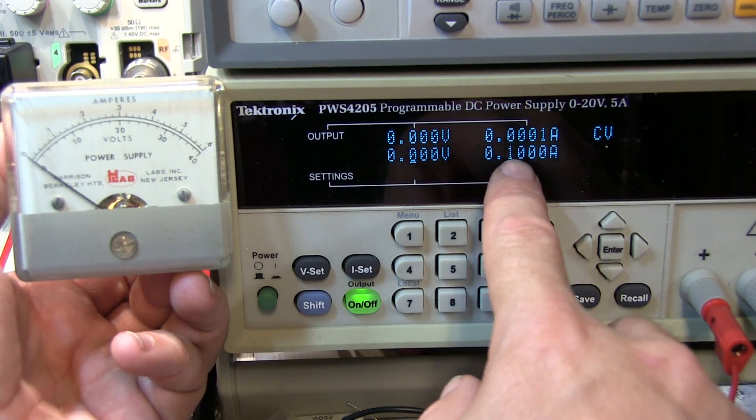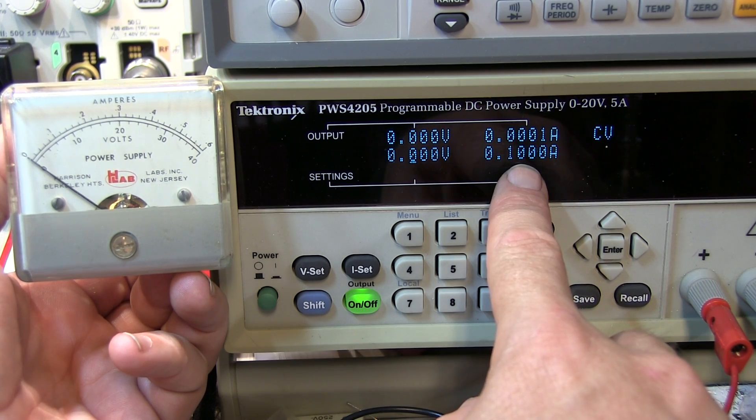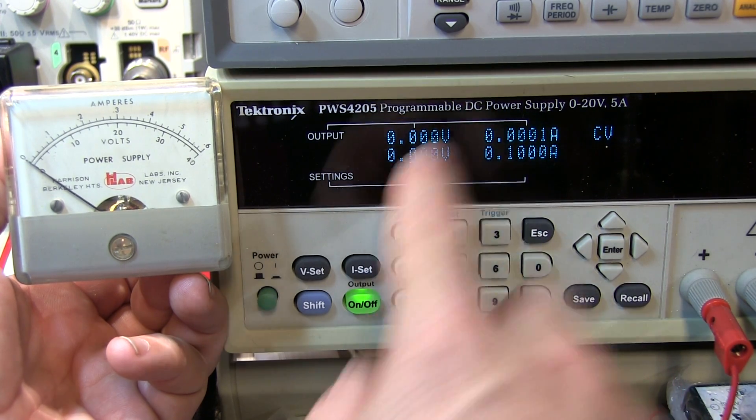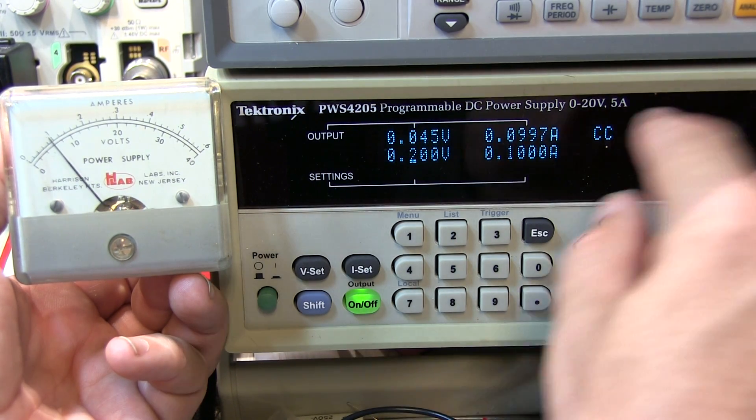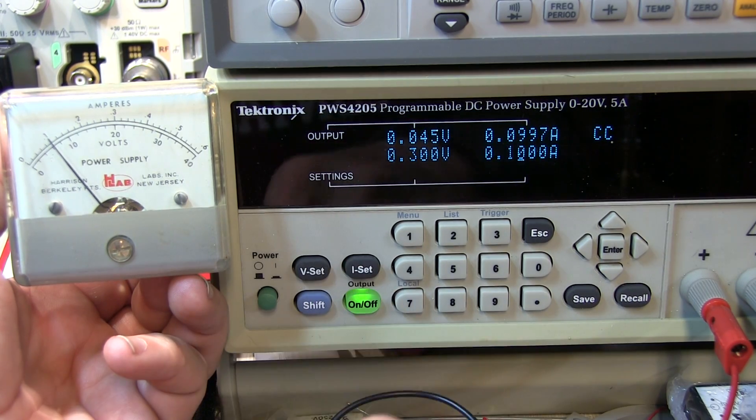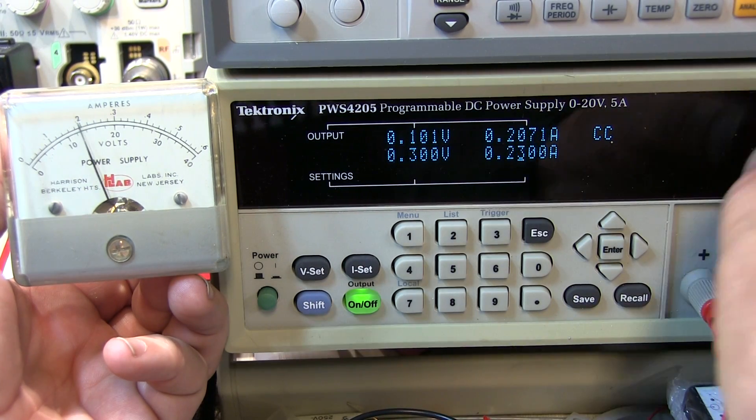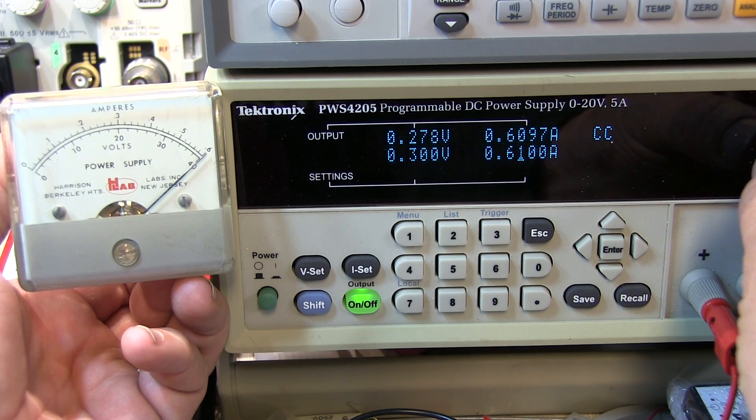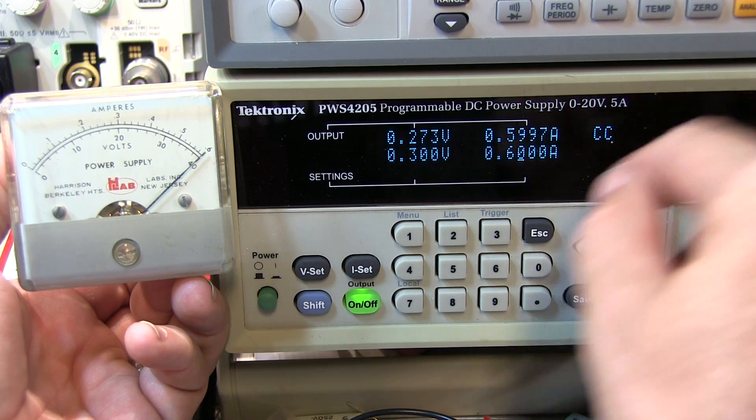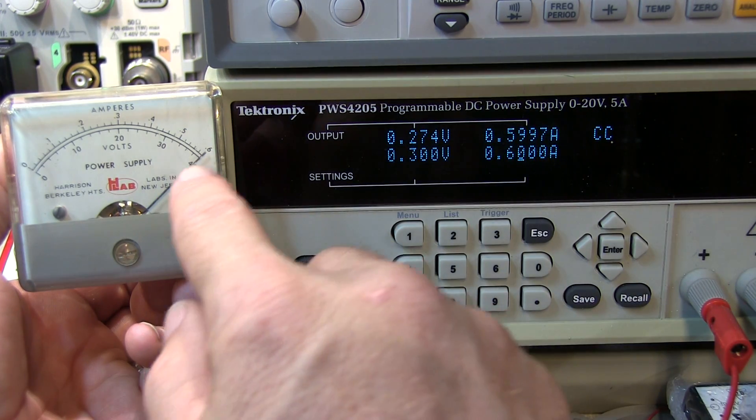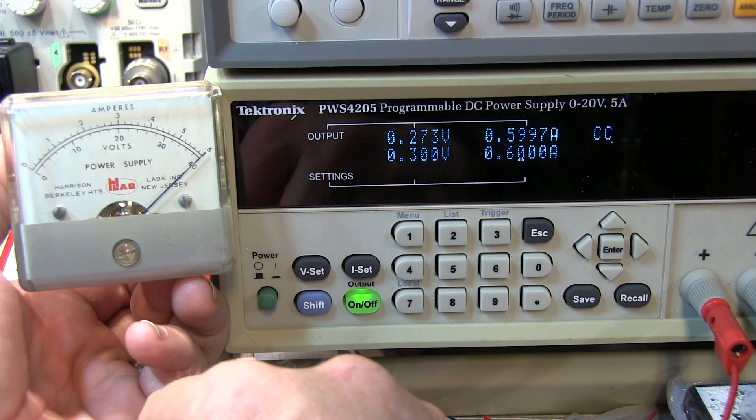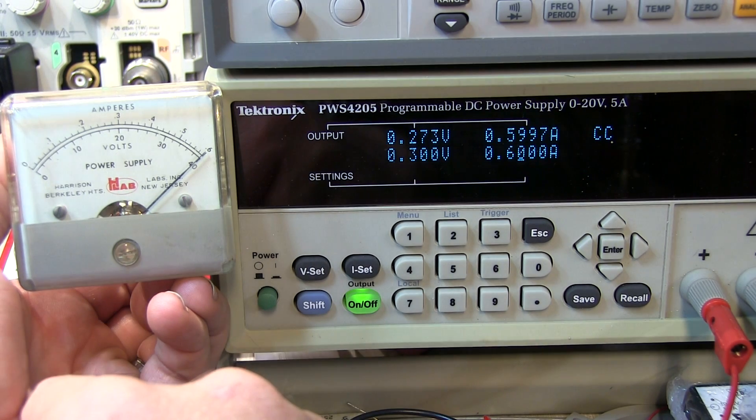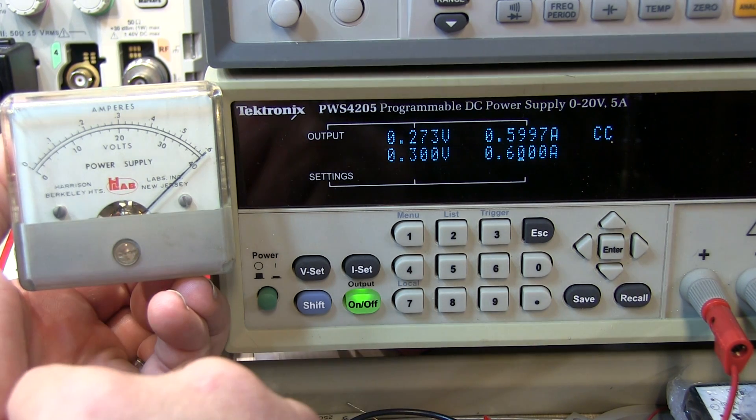So the first thing we'll do is set the current limit to 0.1 amps, which is well under what we designed for, so it's a safe place to start. We'll adjust the voltage until we go into constant current mode. So I'll switch over to my current limit and start ramping that up. And we should see that the meter should hit full scale right at 0.6 amps, which is what we designed for. So now we know that the current shunt we put together is now accurately turning this meter into a 0.6 amp or 600 milliamp full scale ammeter.